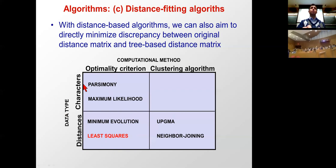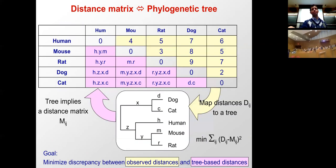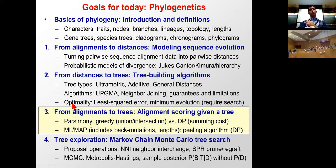A third approach is least squares or minimum evolution: propose trees and update until minimizing the difference between tree-based and observed distance matrices. This is expensive and generally used for character-based rather than distance-based methods. UPGMA and neighbor joining are preferred for distance-based phylogenetics; least squares provides an optimality criterion.